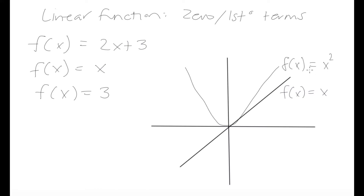f(x) = x squared is actually an example of a parabolic function, which we'll go over in the next few videos. One key difference to take away is that the linear function — this dark black line — has a constant slope, whereas in the nonlinear function the slope is constantly changing.